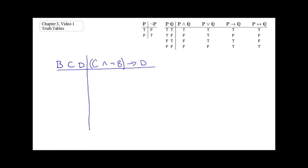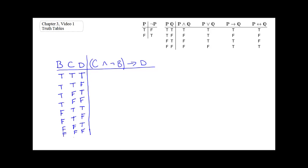To display those eight possible combinations of truth values, we do the following. We start at the rightmost column and alternate T's and F's for eight rows. Then we move one column to the left and alternate by two's: T, T, F, F, T, T, F, F. Then we go out one more time and alternate by four's: four T's, four F's. This gives us eight truth value assignments for the three distinct atomic components B, C, and D — all possible combinations of truth values to those three components.